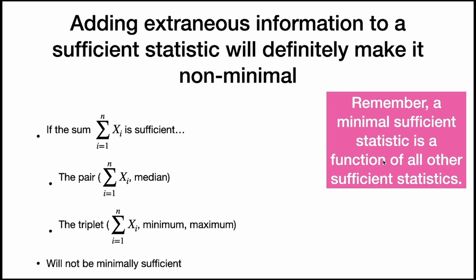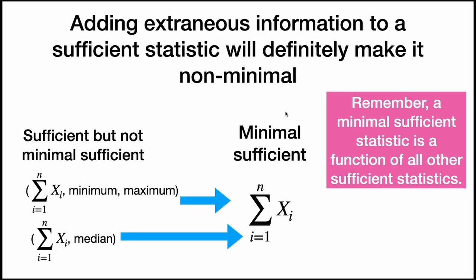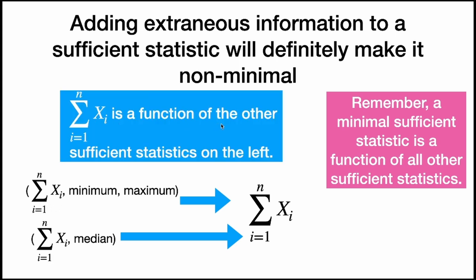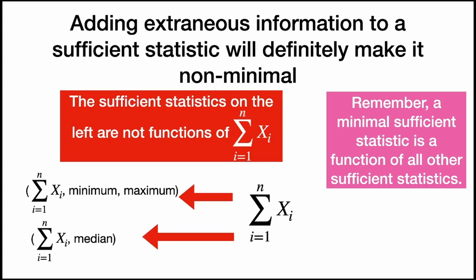A minimal sufficient statistic is a function of all other sufficient statistics — that was our definition. The minimal sufficient statistic is a function of these other sufficient statistics: if I have the compound sufficient statistics, I get the minimal sufficient statistic by just taking the first element, the sum. So the sum is a function of those other sufficient statistics. However, the sufficient statistics with extra information are not functions of the sum — if I just have the sum, I can't retrieve the additional information. That means these sufficient statistics are not minimal because they're not functions of all other sufficient statistics.